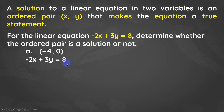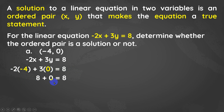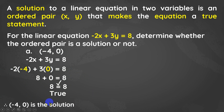Substitute negative 4 to x and 0 to y. Negative 2 times negative 4 plus 3 times 0 is it equal to 8? Negative 2 times negative 4 is positive 8, and 3 times 0 is 0. So 8 equals 8 — yes! That means the ordered pair negative 4 and 0 is a true statement for our linear equation, so it is a solution.